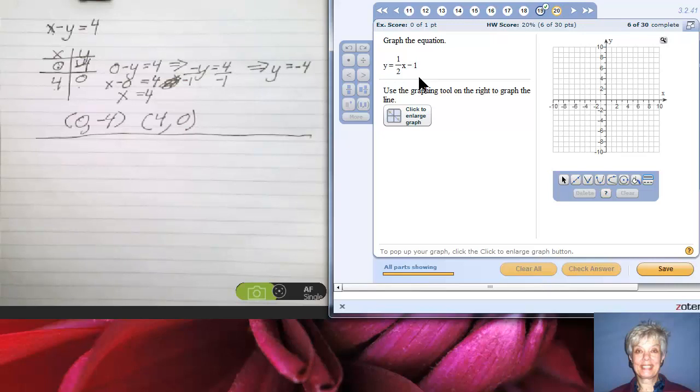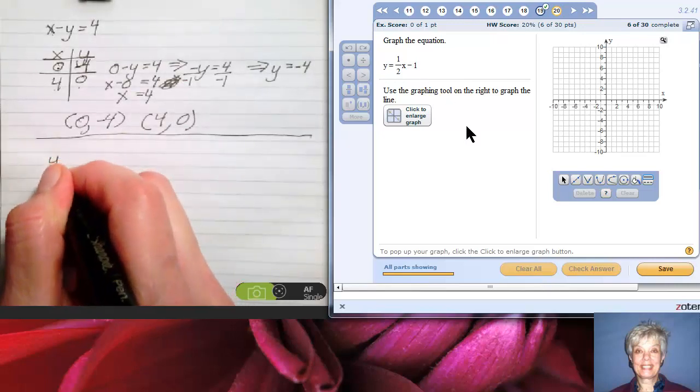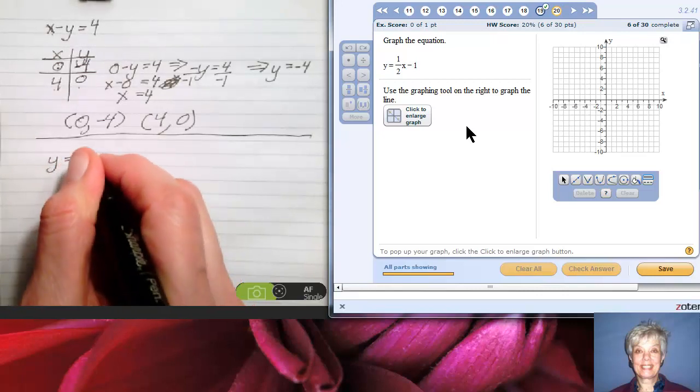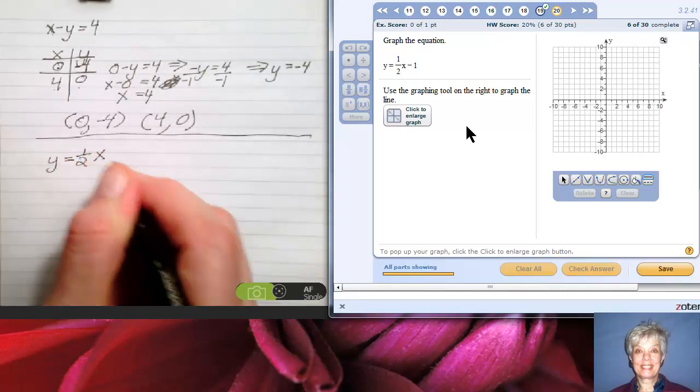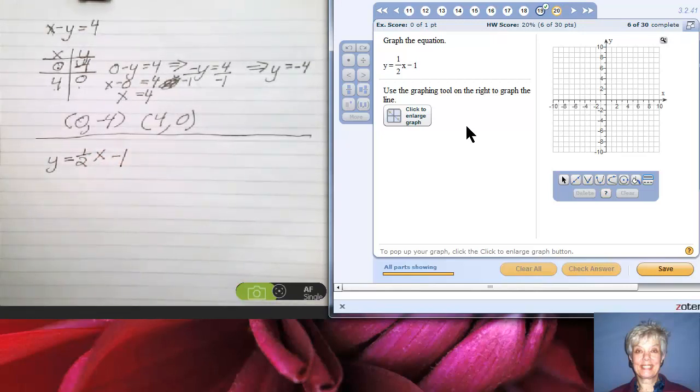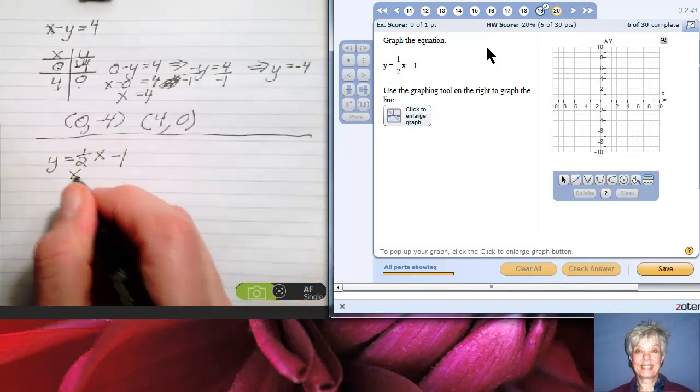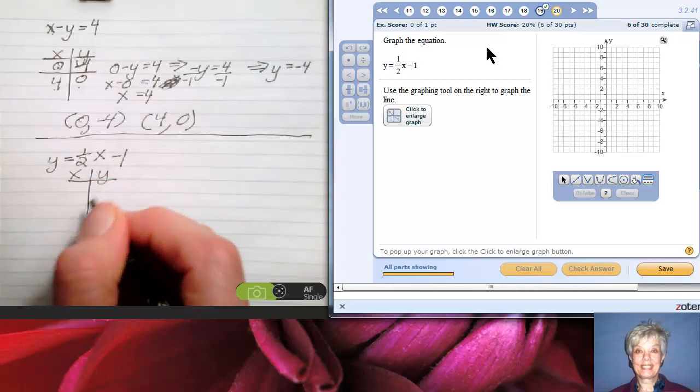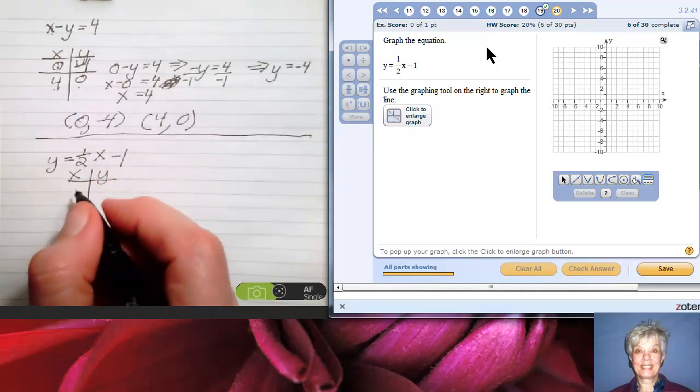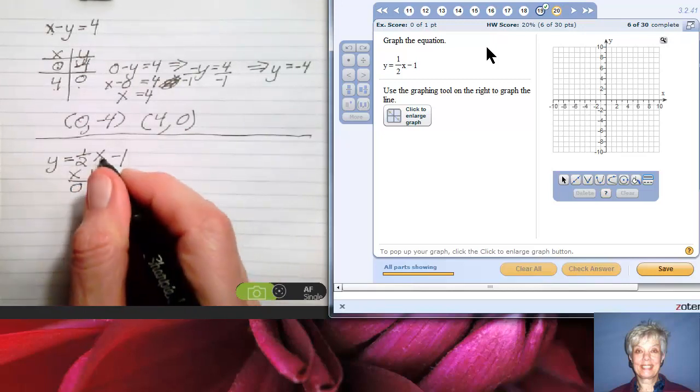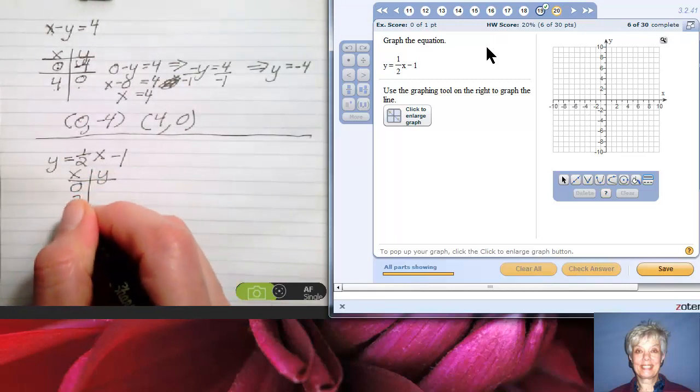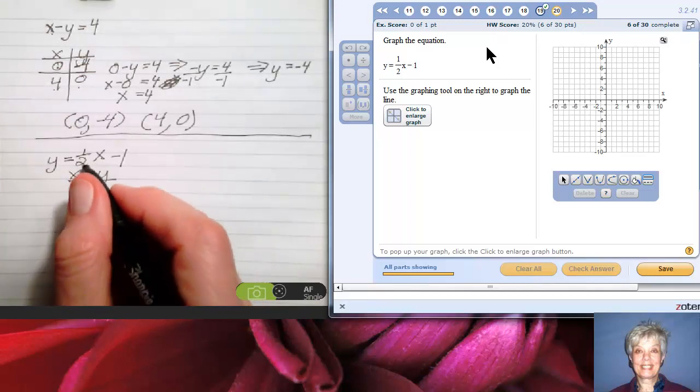Y equals 1/2 x minus 1. This line is written in slope-intercept form. Again, I'm going to make a t-table. Now notice that the instructions say graph the equation, they don't say find the intercepts. So I don't have to use this 0, 0 method. Instead, I'm just going to find any old points that are convenient.